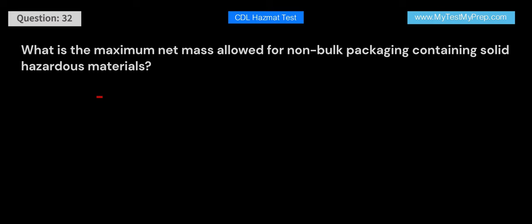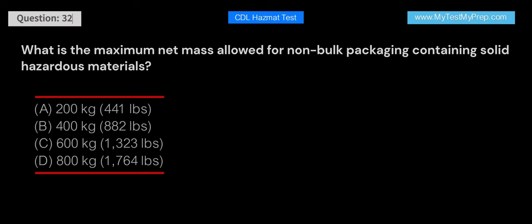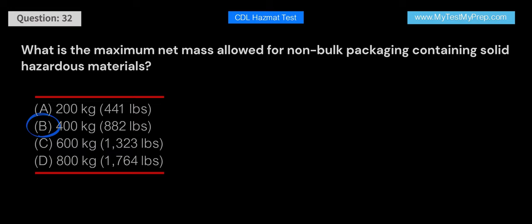What is the maximum net mass allowed for non-bulk packaging containing solid hazardous materials? Answer: B. The maximum net mass allowed for non-bulk packaging containing solid hazardous materials is 400 kg (882 lbs). This limit helps to ensure the safe transportation of hazardous materials in smaller containers while maintaining compliance with regulatory requirements.